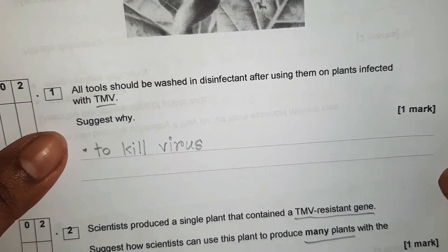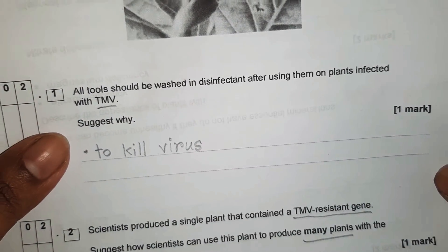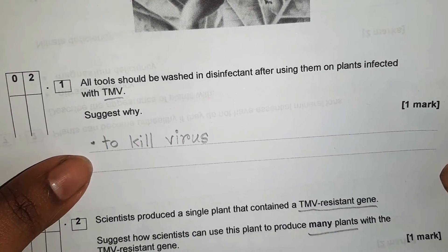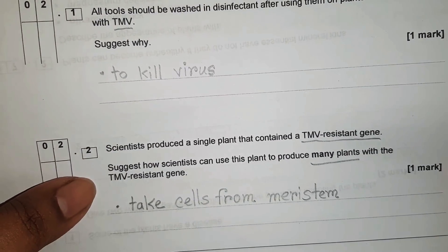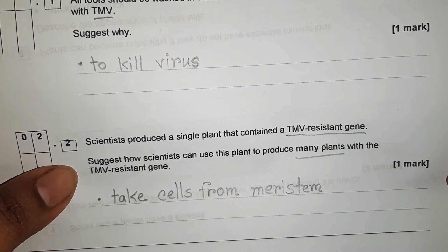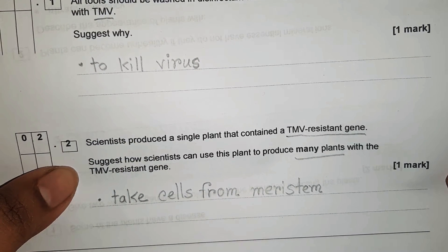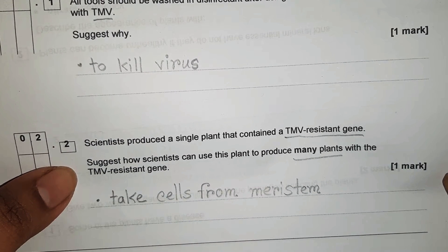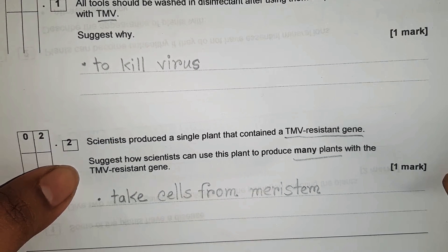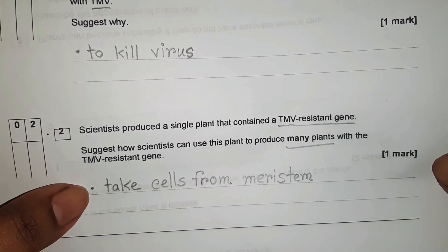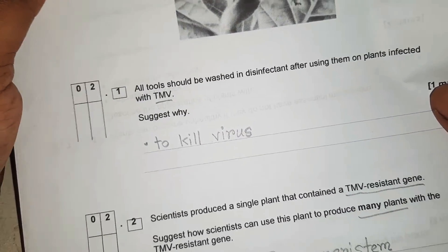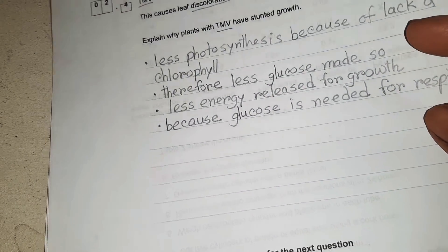Question 2.1: all tools should be washed in disinfectant after using them on plants infected with TMV — suggest why. Answer: to kill the virus. Question 2.2: scientists produced a single plant containing a TMV-resistant gene. Suggest how scientists can use this plant to produce many plants with the TMV-resistant gene. Answer: take cells from the meristem.